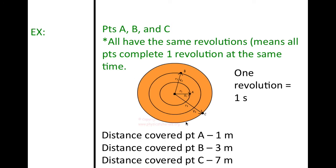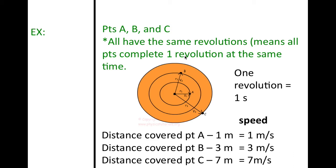You notice that the distance that point A travels will be less than what B and C travel. The distance covered by point A is one meter; one meter divided by one second gives a speed of one meter per second. Point B covers three meters in one second — three meters per second. Point C is seven meters per second. So the further out you go, covering different distances increases your speed.